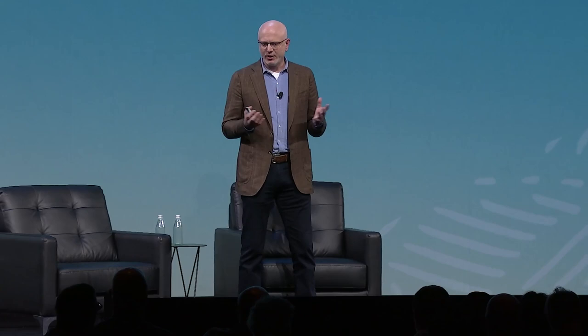A good example is RDMA cluster networking. What we allow you to do is effectively build on-the-fly supercomputers. We put together networks over high-bandwidth IP fabric using RDMA — node-to-node communication is reduced to about 1.5 microsecond latency, so ultra-low latency. We can scale out HPC clusters up to 512 GPUs today, and for CPU-based clusters we can scale up to 20,000 nodes. This has been very popular with customers for both artificial intelligence scenarios and machine learning as well as HPC deployments.